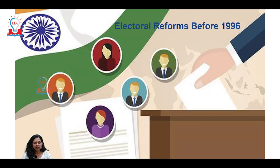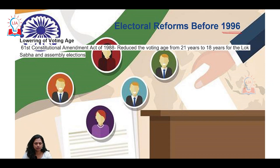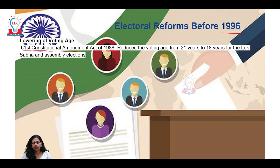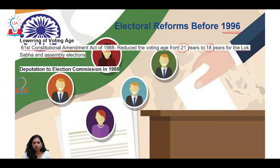Starting from the journey before 1996, the first and most important reform is the 61st Constitutional Amendment Act of 1988, which essentially reduced the voting age for eligibility to vote. According to Universal Adult Franchise, today 18-years-plus citizens of India are eligible to vote — earlier it was 21 years of age. This Amendment Act reduced the age to 18 years for eligibility to vote in Lok Sabha as well as Assembly elections.